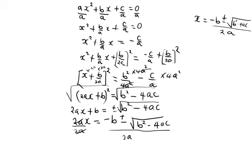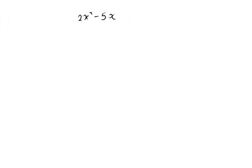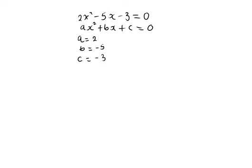Next, I want us to apply the quadratic formula to solve the quadratic equation 2x squared minus 5x minus 3 equals 0. Comparing this to ax squared plus bx plus c equals 0, we identify that a equals 2, b equals negative 5, and c equals negative 3.